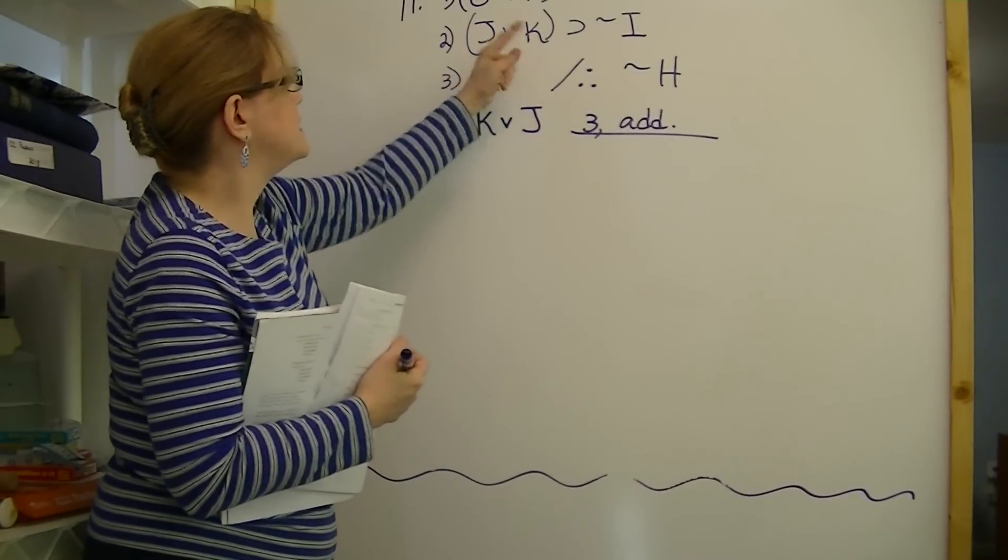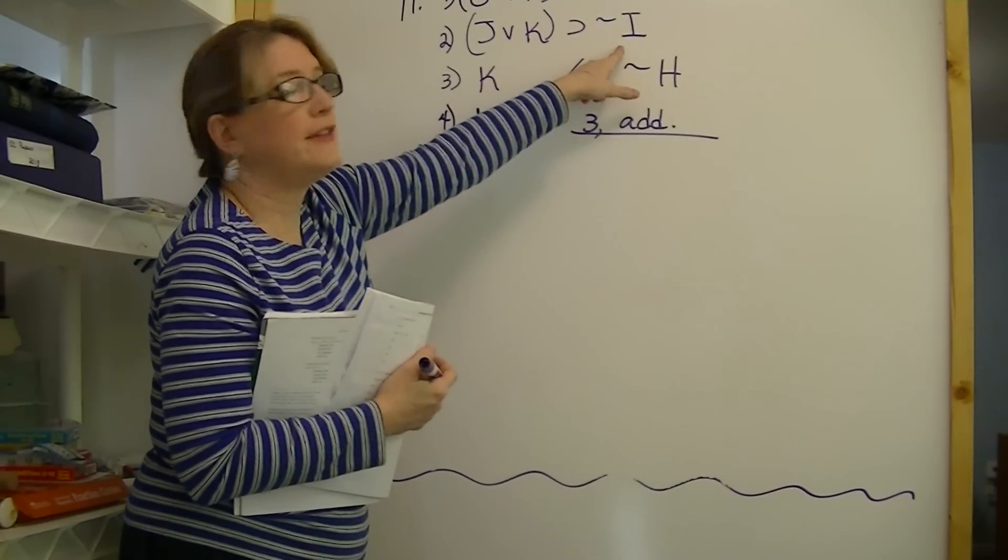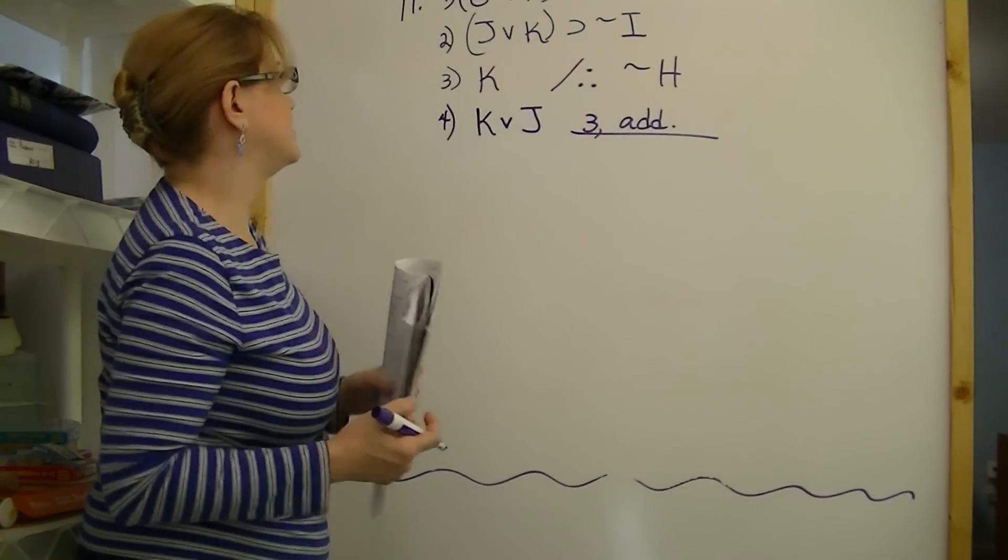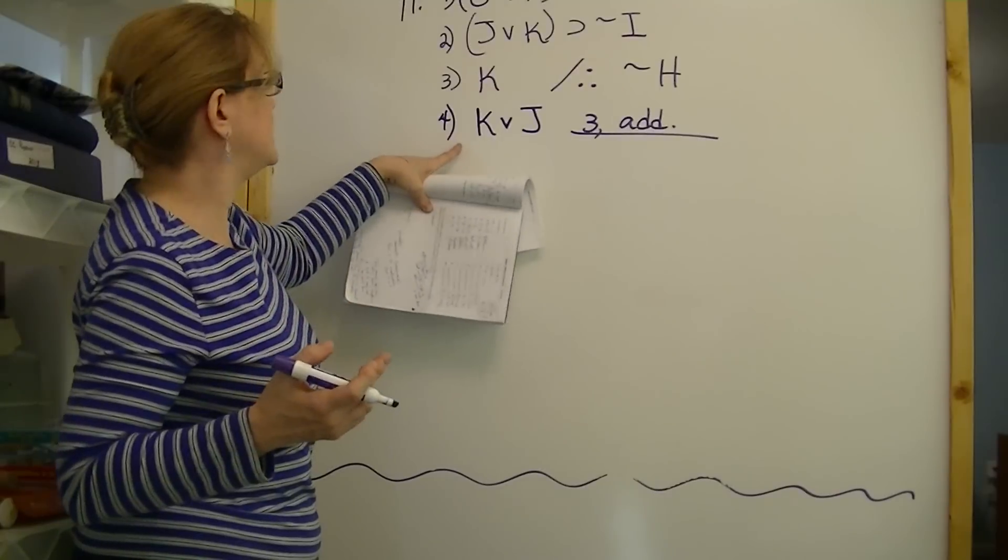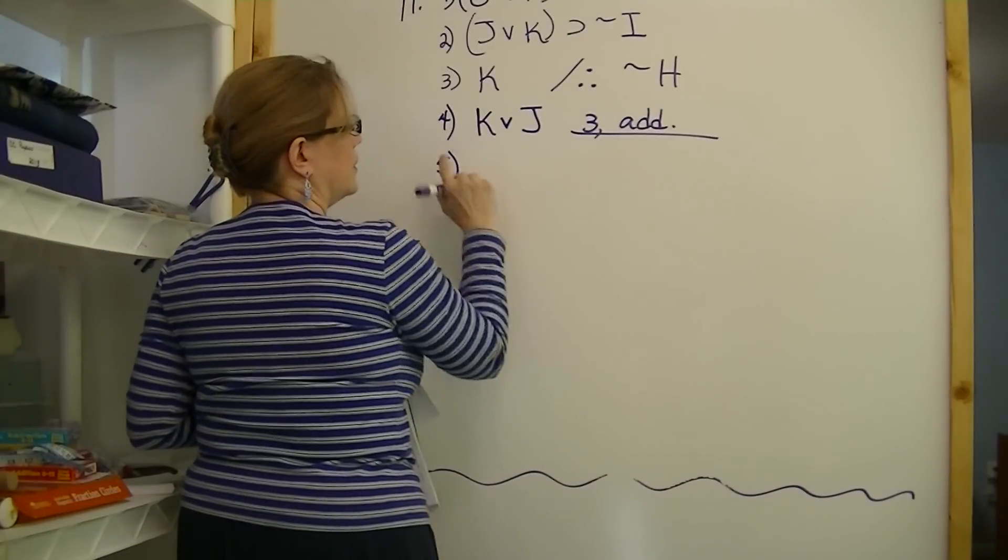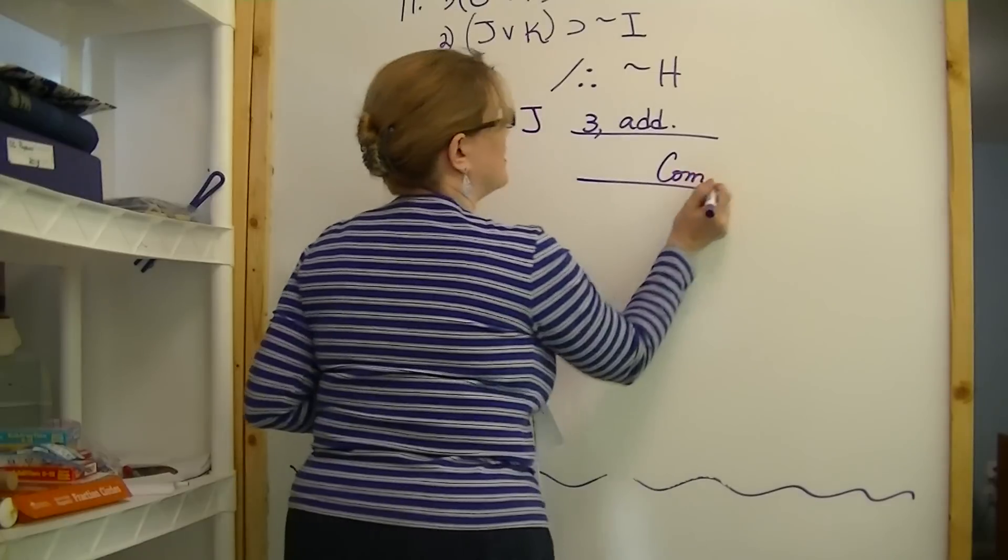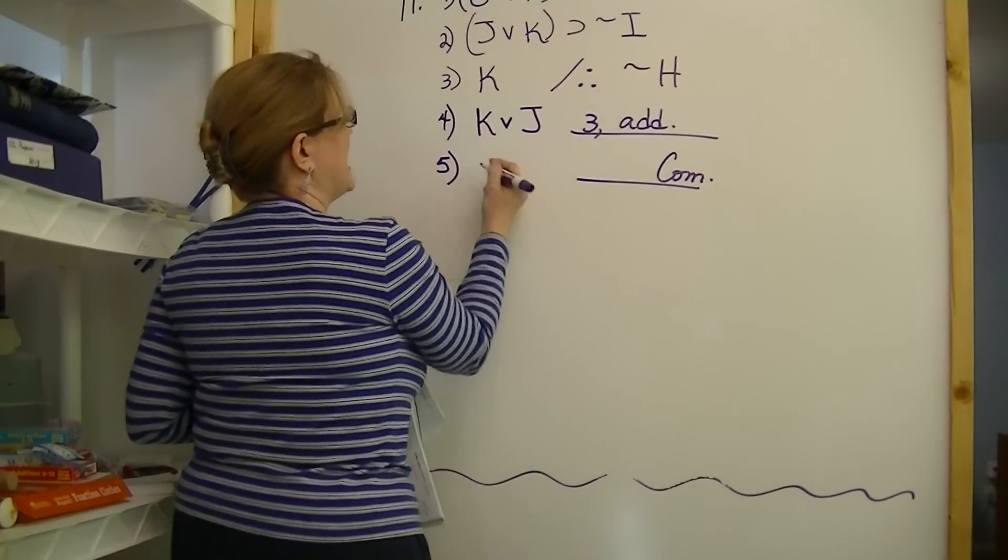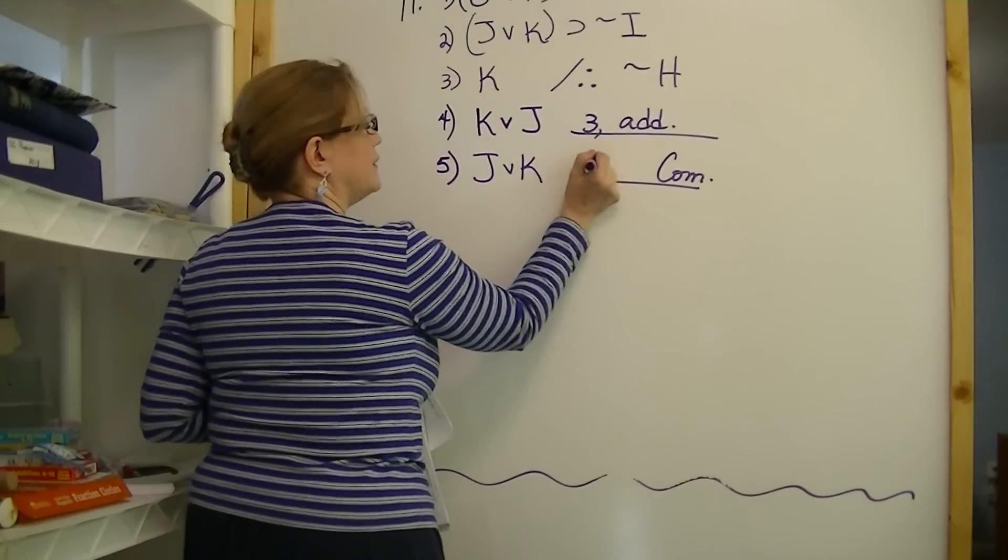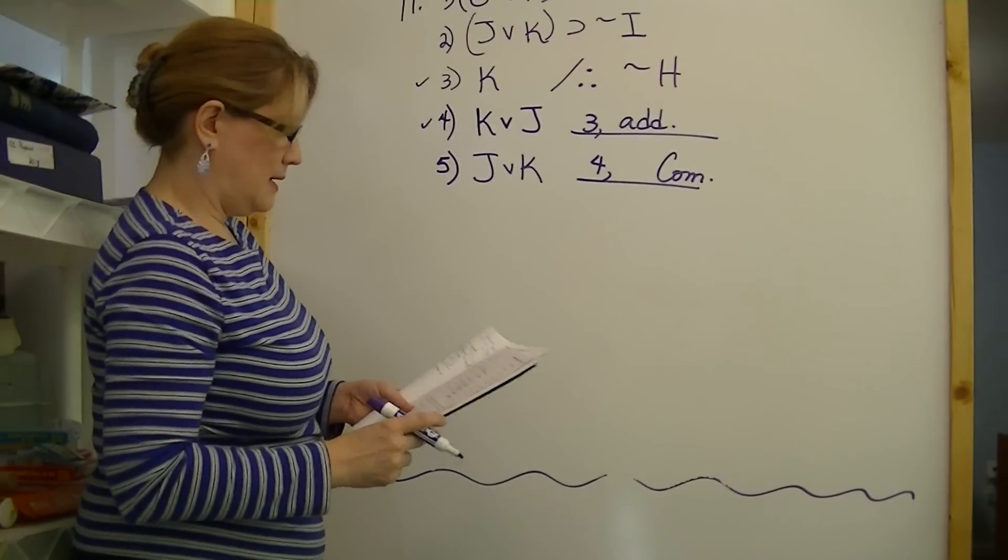Now that we have that, what we want to do is flip them so that we can then have the implied not I. We're going to try to use all our lines if possible. Well, we want to use all our lines. So we've got K or J. Now we're going to commute, we'll use the commutative law, commutation, and change this to J or K from line four. I've used line three and four.